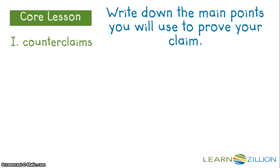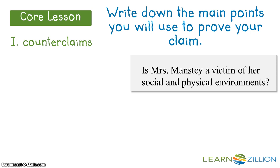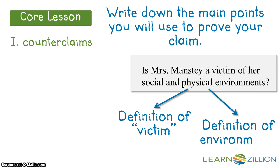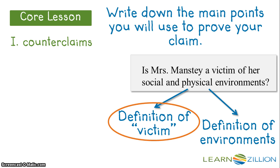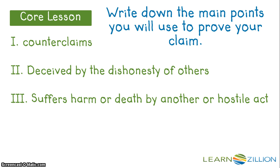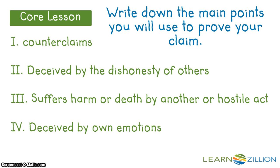Let's look at the prompt again that we have already analyzed. Based off of this prompt, we can organize this essay in two ways: we can organize it by the definition of the term victim, or we can organize it by the definition of the two environments. I think I can use the examples of the two types of environments as my evidence. So that means I'm going to organize my overall paper by the three parts of the definition of victim. One point I want to prove is deceived by the dishonesty of others. Then, suffers harm or death by another or hostile act will come next. And finally, deceived by a person's own emotions and ignorance. By doing this, I'm ensuring that my paper remains focused on its purpose, which is to prove that Mrs. Manstey is not a victim.